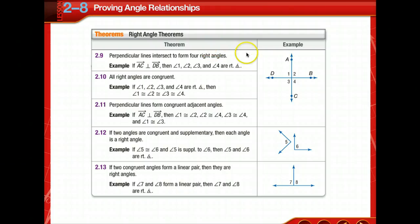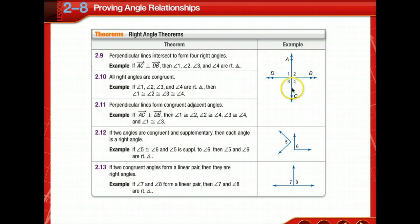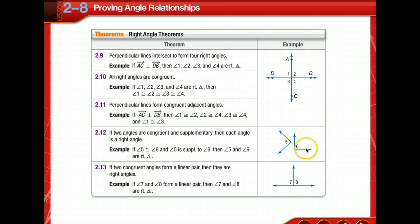The last thing to add to your theorems for today is the right angle theorems. We already know that perpendicular lines form four right angles and that all right angles are congruent — they're all equal to 90. Perpendicular lines form congruent adjacent angles. If two angles are congruent and supplementary, each angle is a right angle — they must each be 90 since they add to 180. If two congruent angles form a linear pair, then they are right angles. Get those copied into your notes and you're done.